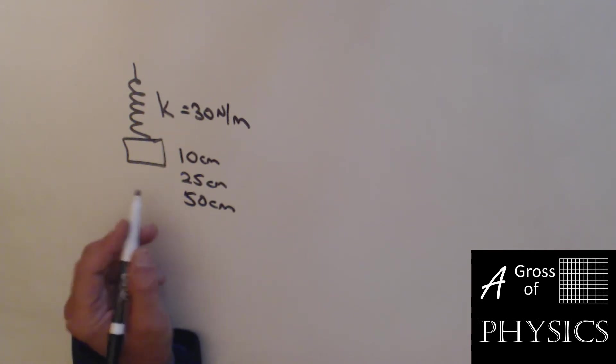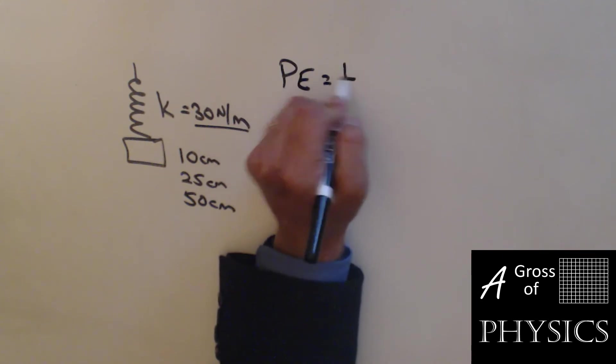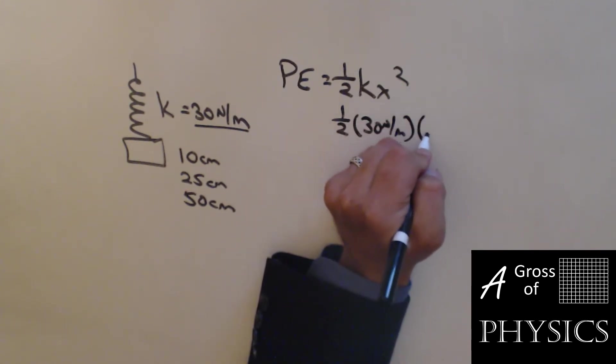Now, of course, if we were to exceed the elastic limit and stretch the spring out too far, then the energy would not be the same. We're assuming this k is constant, so these values would definitely have to be within the elasticity limit of the spring itself. Now, our equation is one-half kx squared, one-half 30 newtons per meter, and all these centimeters need to be in meters, 0.1 squared.